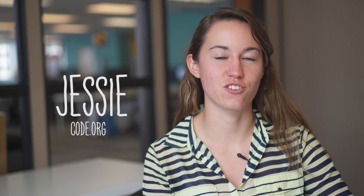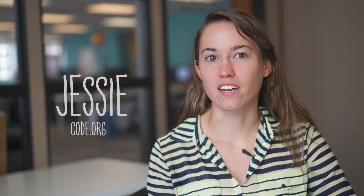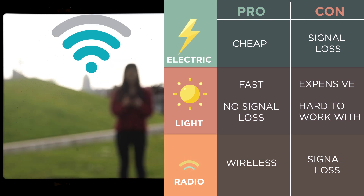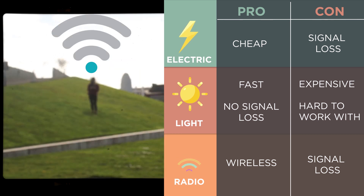In Unit 1, students learned about the physical internet — how digital data is transmitted via wires, cables, and Wi-Fi. But the physical internet is inherently unreliable. Wires can get cut, data can get corrupted during transmission, and routers can simply drop data when they are overwhelmed with requests.